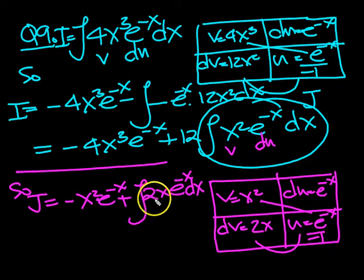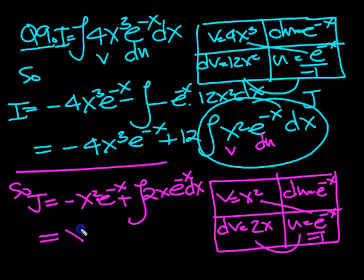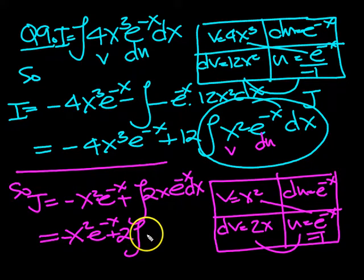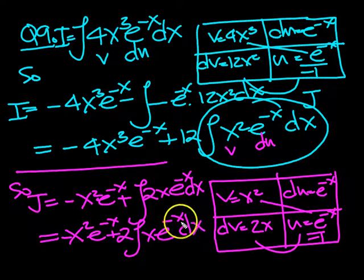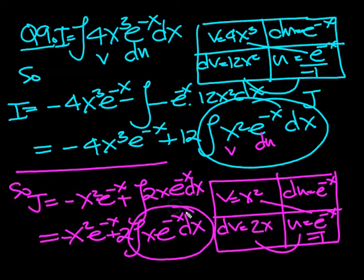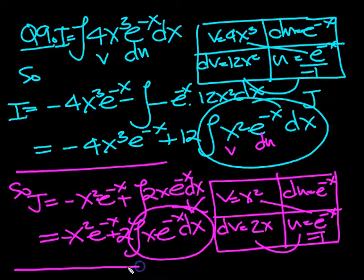The two can come out to the front. So j is equal to minus x squared e to the minus x plus two lots of the integral of x e to the minus x dx. Now we can circle this and call that k. That was the j problem done.